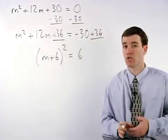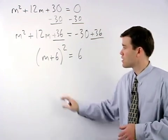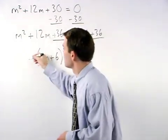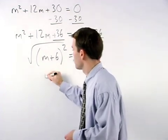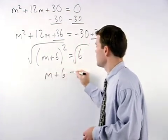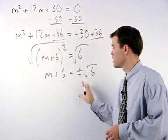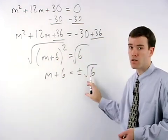And now our problem looks just like one of the examples in the previous section. To solve for m, we get rid of the squared by square rooting both sides and we have m plus 6 equals plus or minus root 6. Don't forget to use plus or minus when square rooting both sides of an equation.